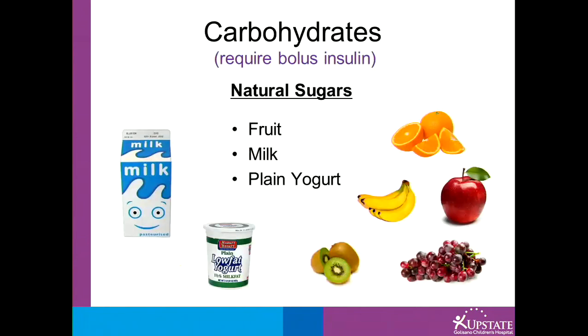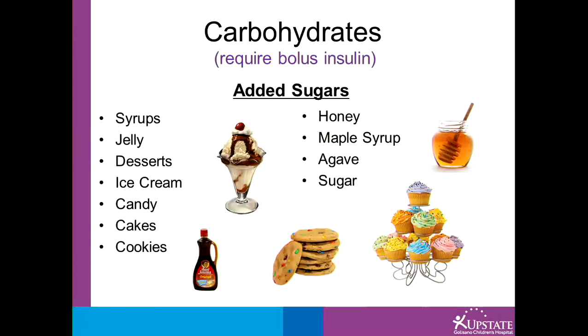Foods containing natural sugar such as fruit, milk, and plain yogurt are sources of carbohydrate. Even though these foods contain natural sugars and are healthy foods, they will still raise your blood sugar. Added sugars also contain carbohydrates. These include syrups, jellies, desserts, ice cream, candy, cakes, cookies, honey, maple syrup, agave, and sugar.